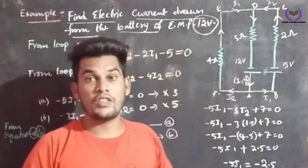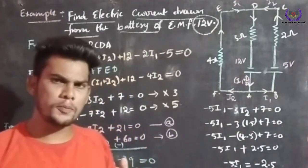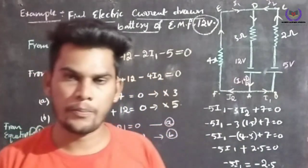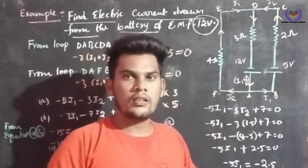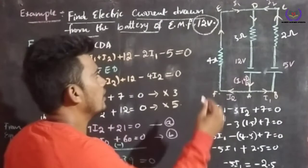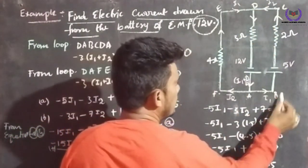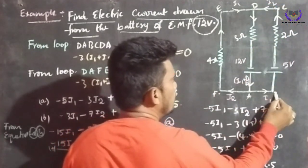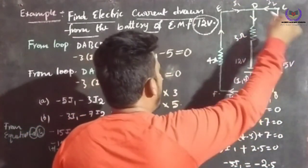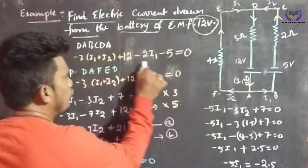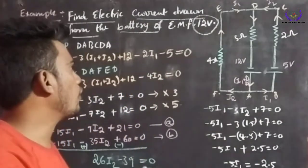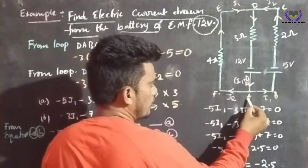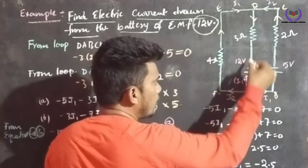If you observe this figure, there are two loops — loops are nothing but individual circuits. There are two circuits and the group of circuits are called loops. I will take one loop: D, A, B, C, D. From this loop I am going to obtain an equation.